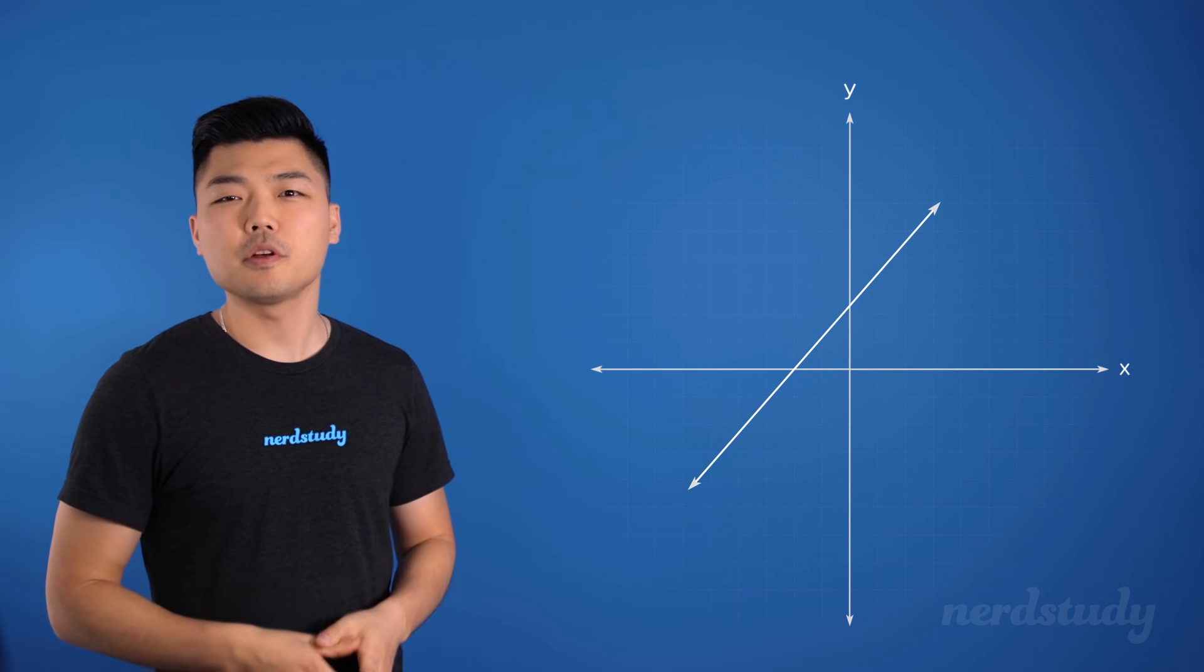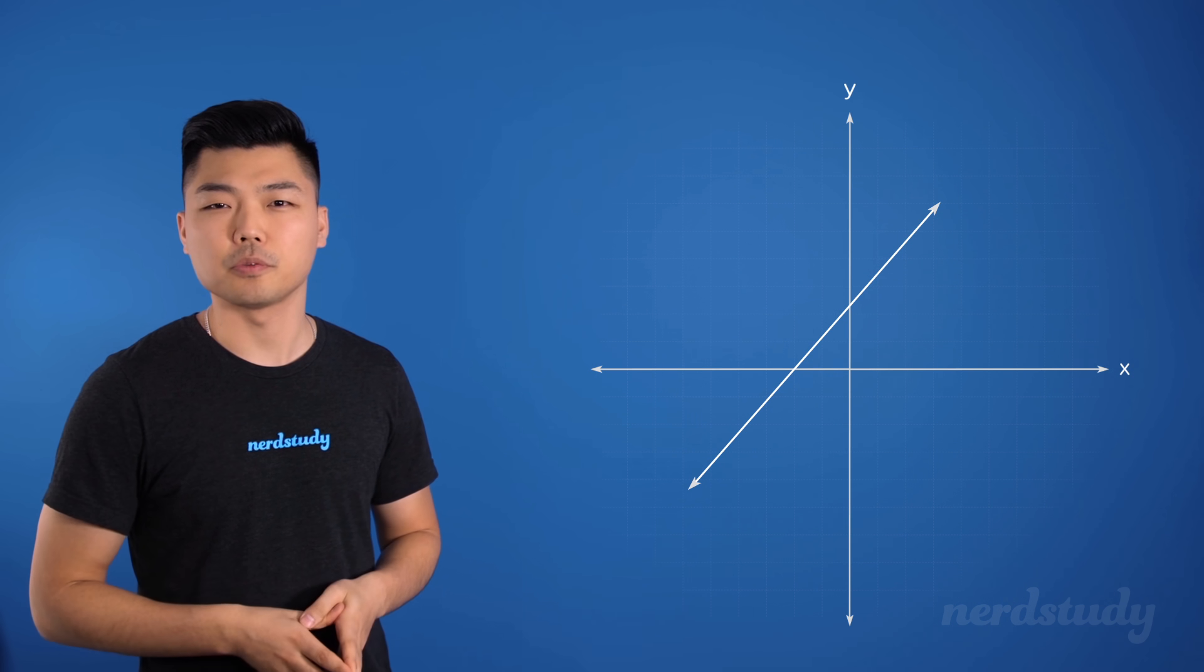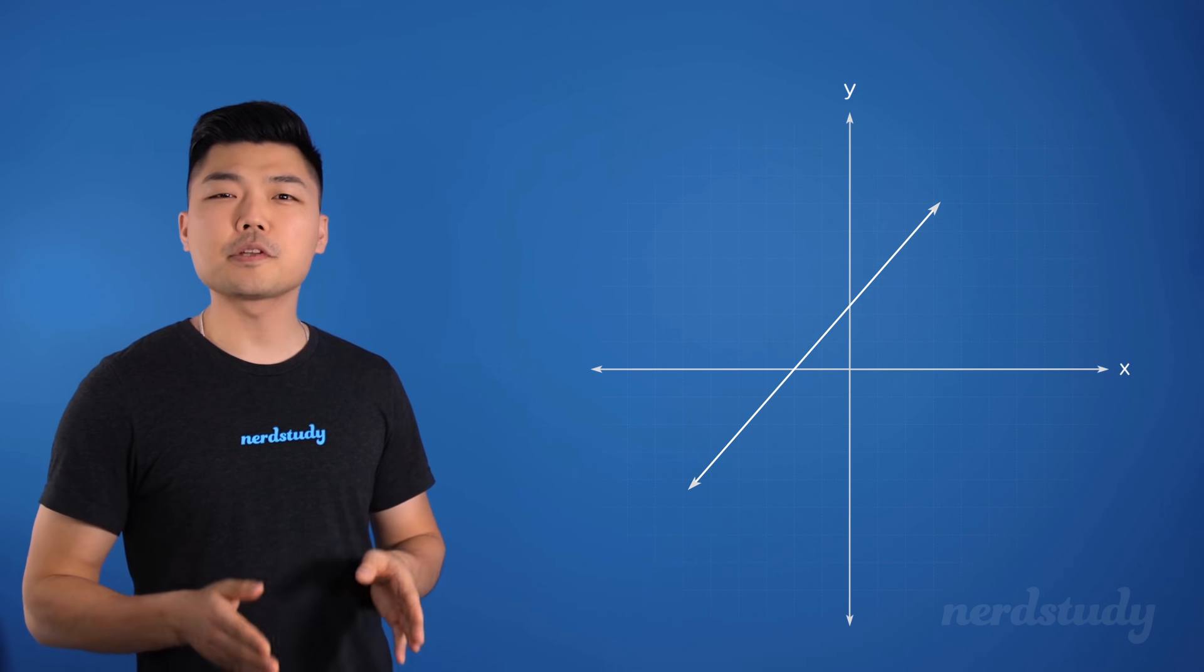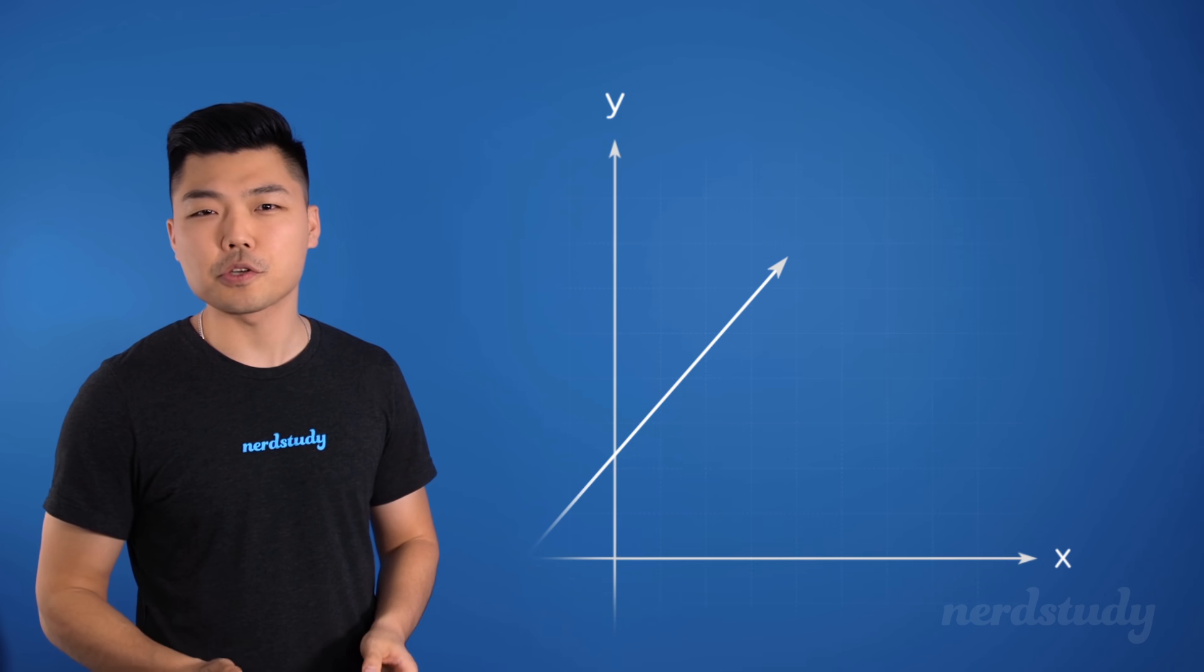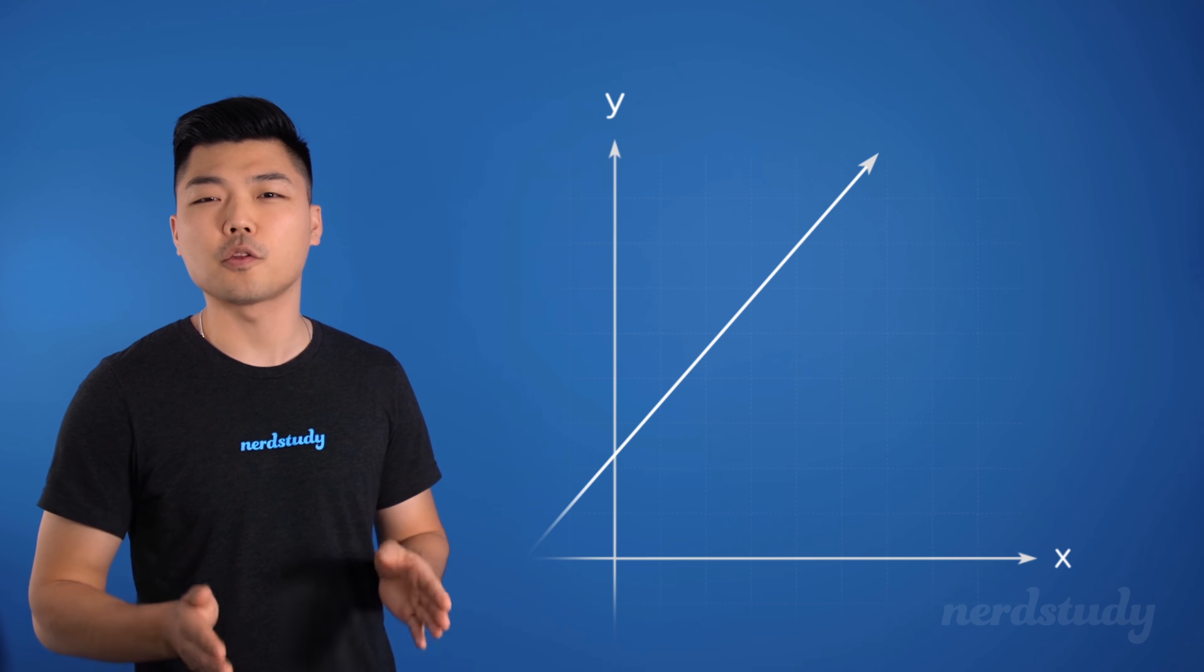This linear graph, for example, does not have an asymptote. As the values go towards infinity on the x-axis, the graph also continues to go towards infinity along the y-axis.